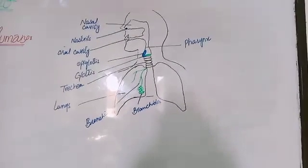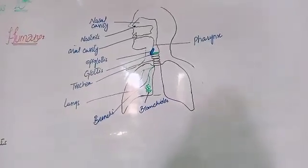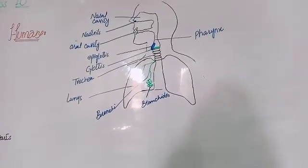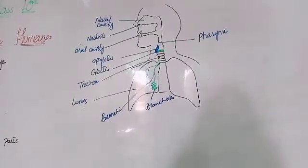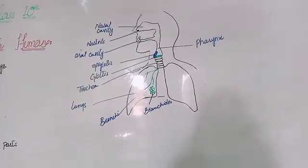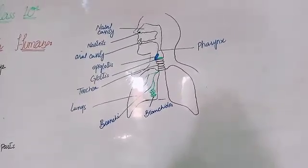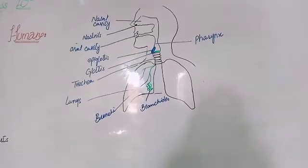The glottis is a body mass opening covered by the epiglottis. When we eat food, the epiglottis covers the glottis so that food doesn't go into the larynx and instead goes to the esophagus.